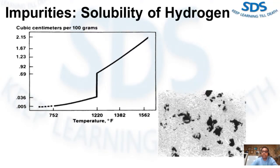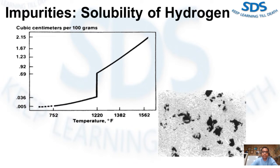Earlier, die casters did not worry about hydrogen. The high rate of solidification in the pressure die casting process resulted in very dispersed and very fine porosity — hydrogen had no chance to collect and grow into large pores during solidification. Furthermore, heavy-walled castings often hid the porosity within, provided the skin was not machined away. Today, thinner sections, more intricate castings, higher demands on quality, and precision machining requirements have placed more emphasis on pressure die casting to lower hydrogen and resultant porosity contents.